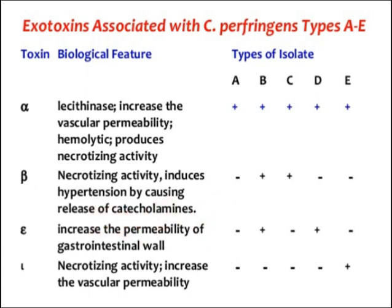Epsilon toxin is found only in types B and D — it is not present in any other type of Clostridium perfringens. Epsilon toxin increases permeability of the gastrointestinal wall, which leads to diarrhea.